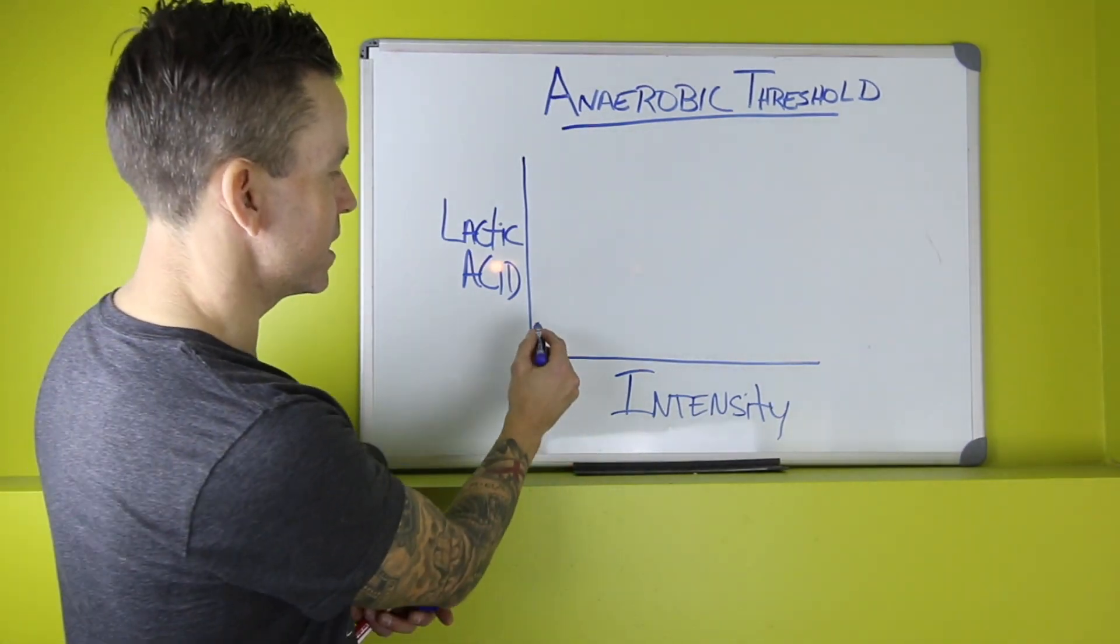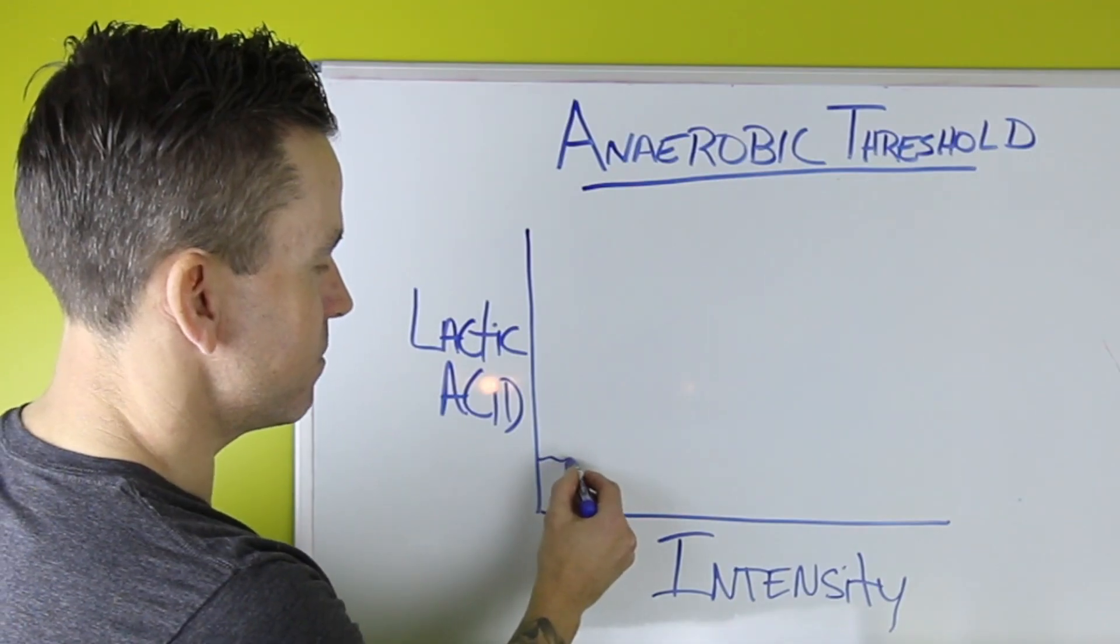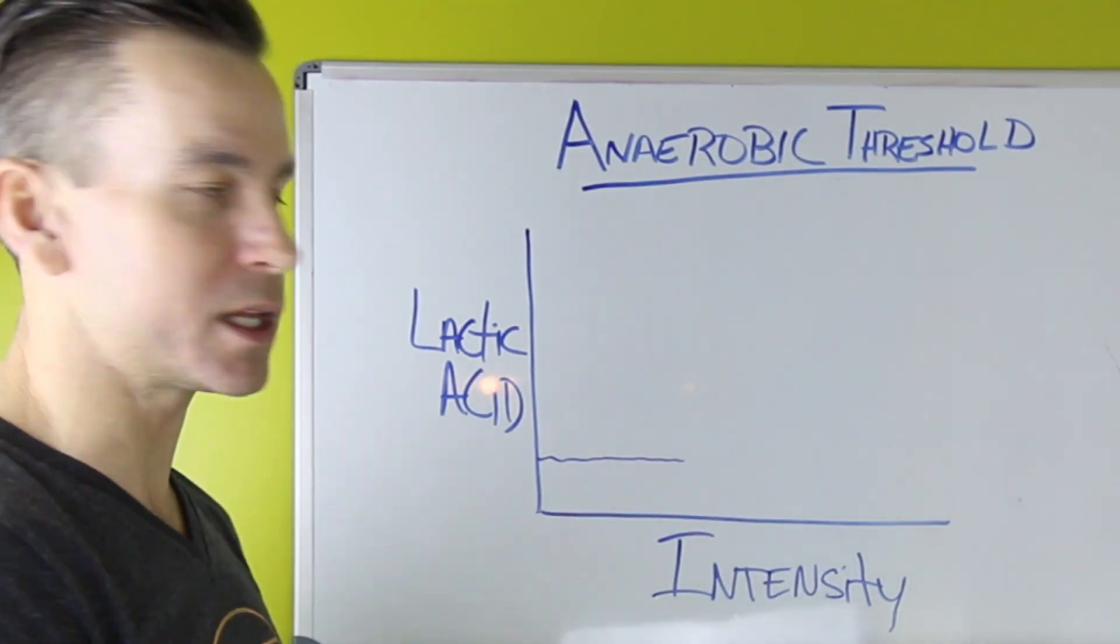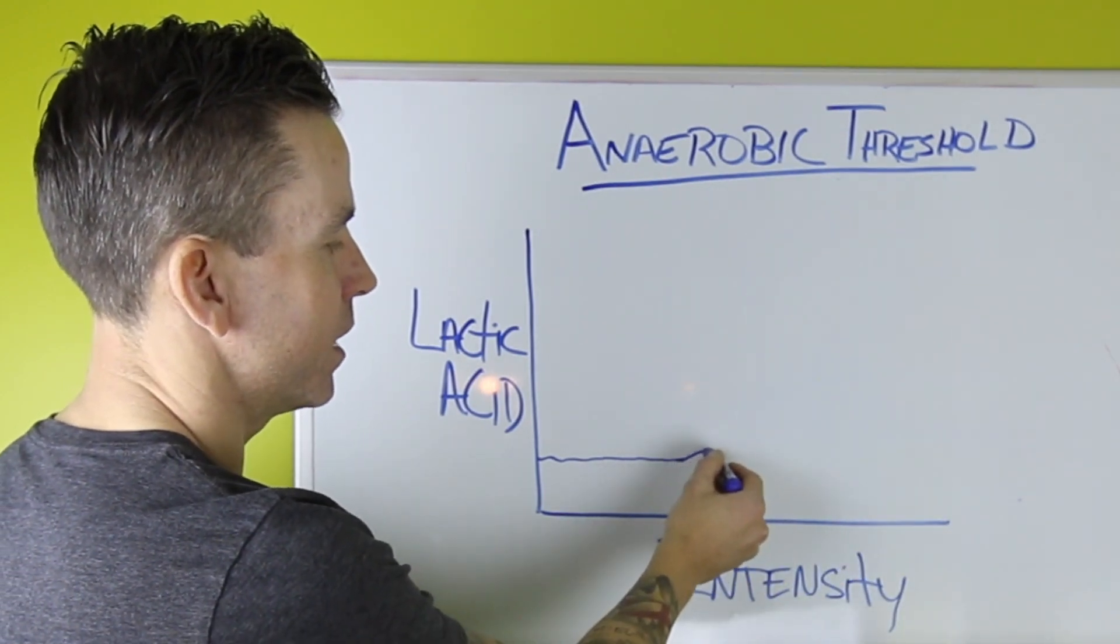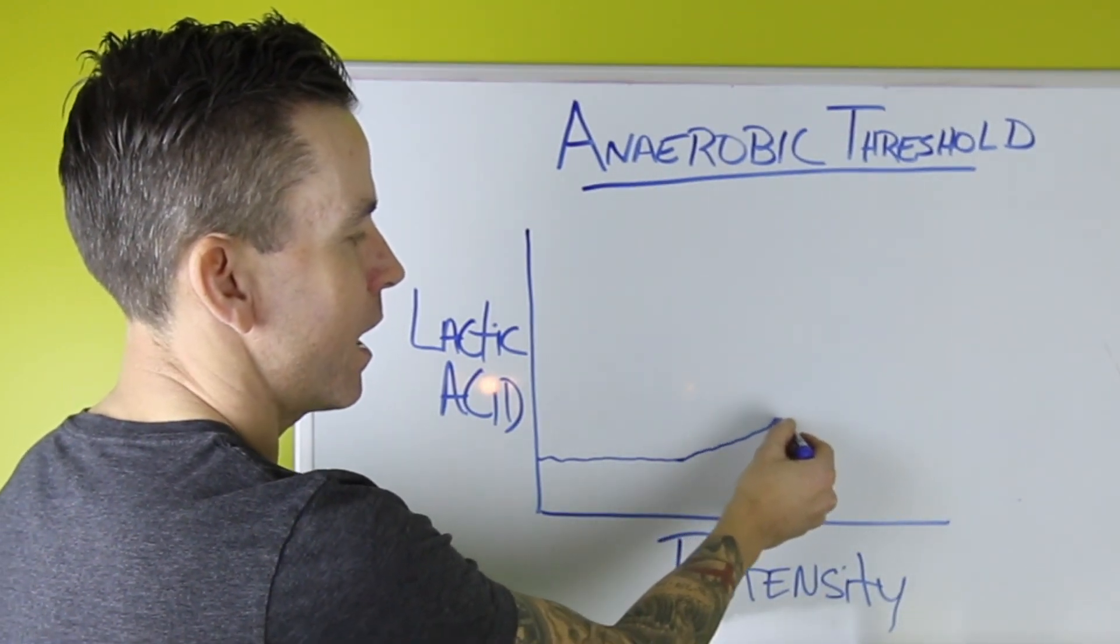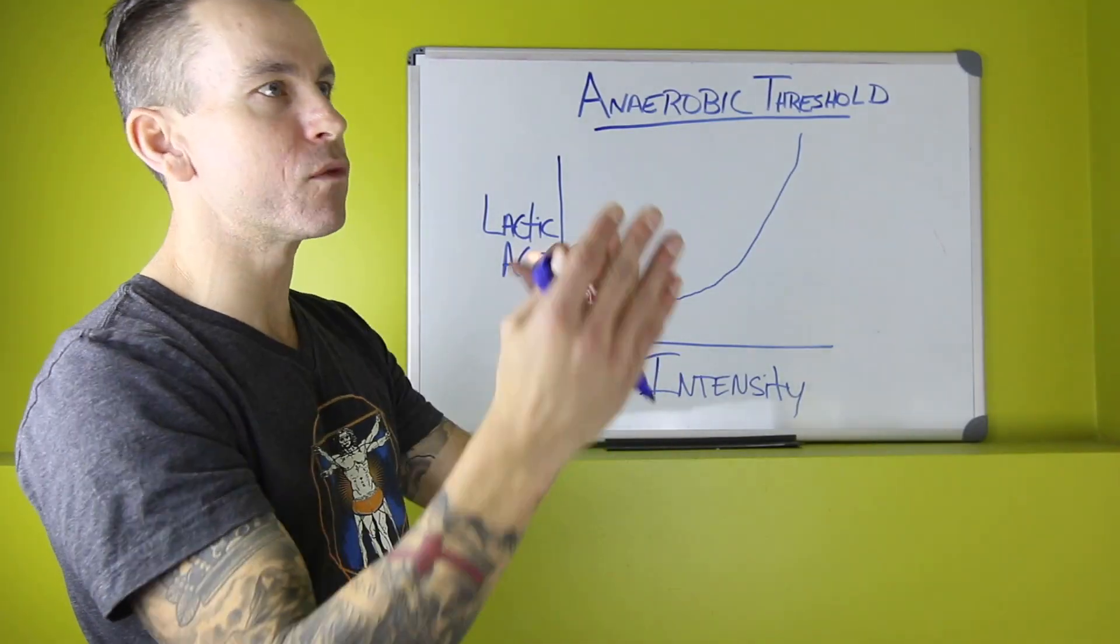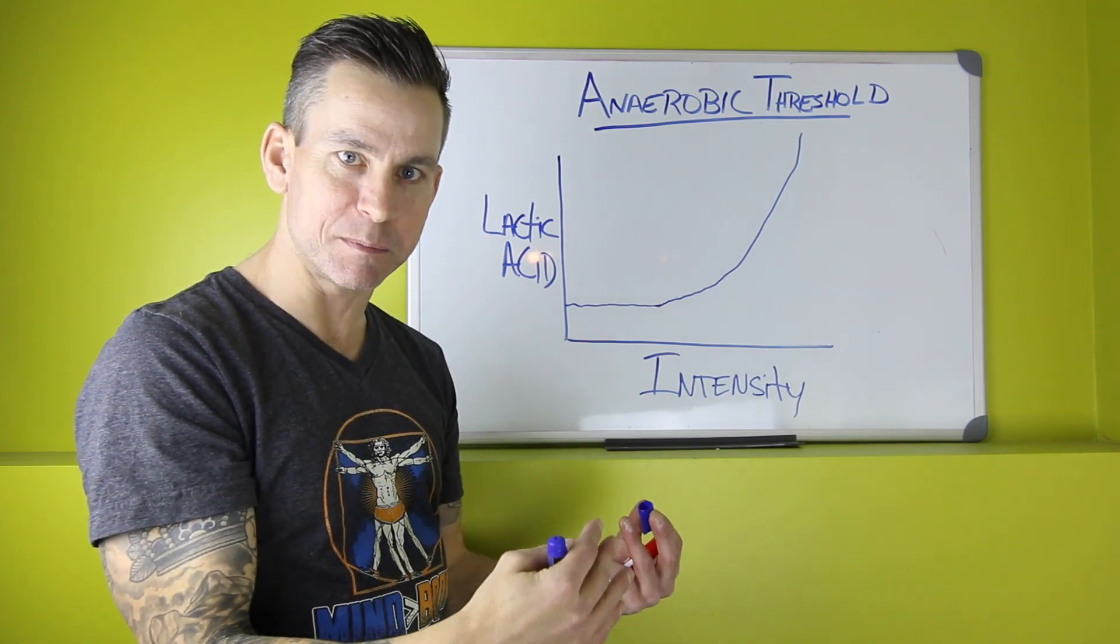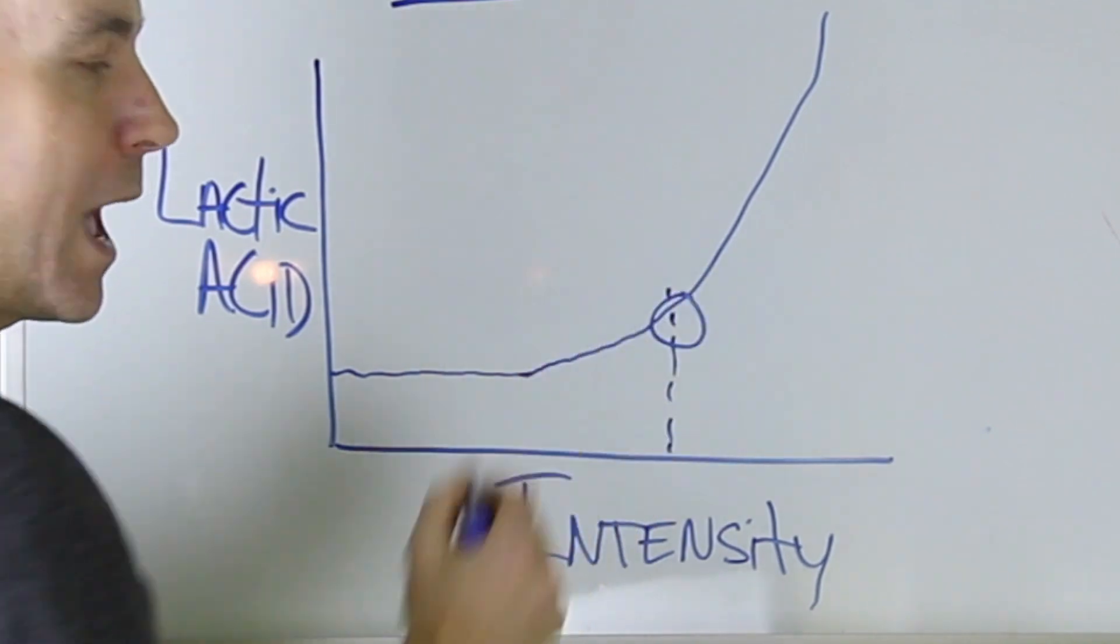As you start out running at lower intensities, the body's able to deal with that lactic acid. You're producing the lactic acid, but your body's able to flush it out quite quickly. As you start to ramp up the intensity, it starts to pool up and eventually it just shoots up. That point where you flip over, where your body can no longer keep up with the amount of lactic acid being produced, is what we call our anaerobic threshold.